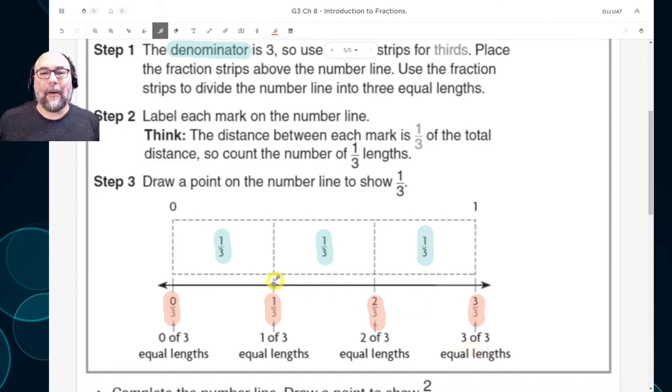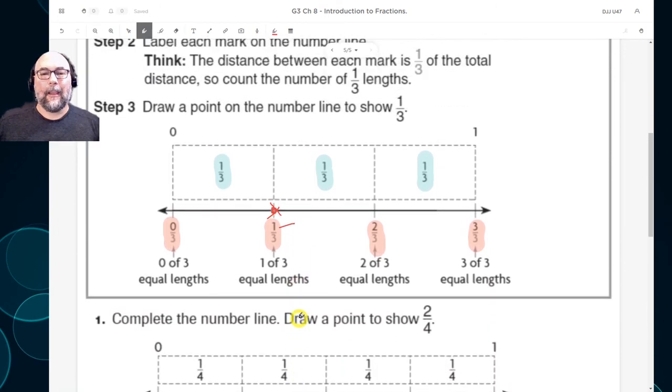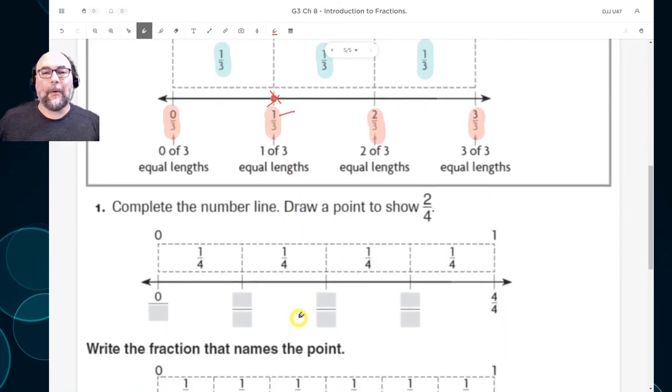And so they've marked this spot right here. And so they marked this spot right here as being one third. Why? Because this has a one right there. All right. So we're going to do this one. Number one. Complete the number line. So they want me to finish this number line. Draw a point to show two fourths. Okay. So this is one fourth, two fourths, three fourths, and four fourths.